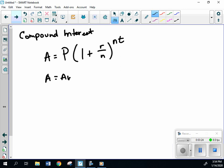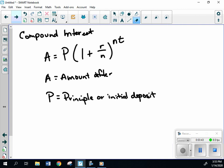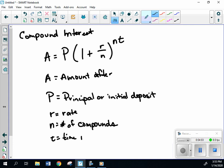A is your amount after. P is your principal or initial deposit. R is your rate. N is number of compounds. And T is time in years.